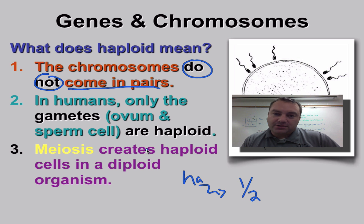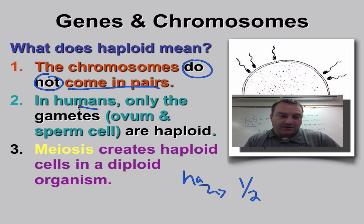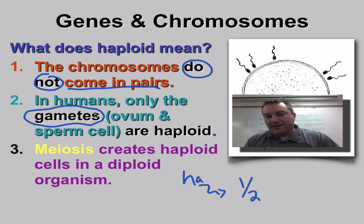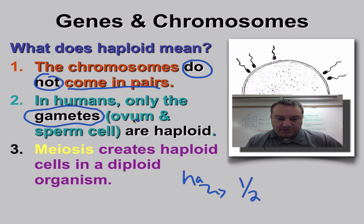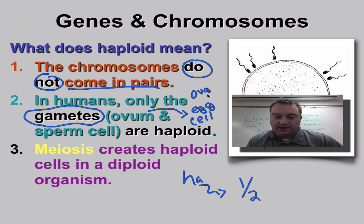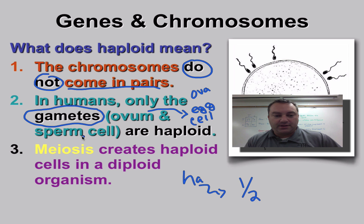In humans, the only cells that are haploid are the reproductive cells, called gametes. You can refer to them as a sex cell, reproductive cell, or a gamete — the fancy scientific word is gamete. The term 'ovum' is a fancy word that means egg cell. Ovum is singular; ova is plural. These are the only ones that are haploid.